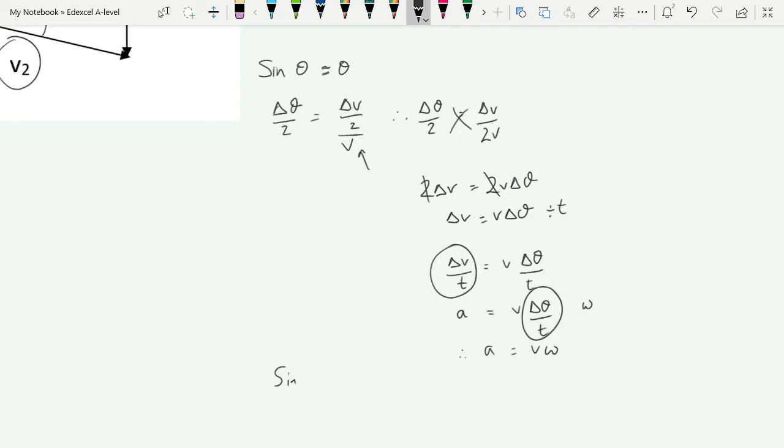Since V is equal to R omega, as we know from the previous video, and therefore omega is equal to V over R, that means that we can substitute for either one of these. We have A being equal to R omega squared if you substitute for V, or A is equal to V squared over R if you substitute for omega. And this is the one that is mentioned in our specification, but all of these are extremely useful in their own way.